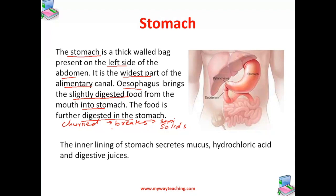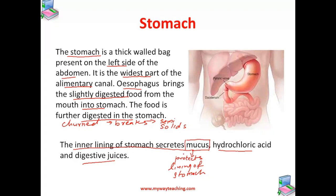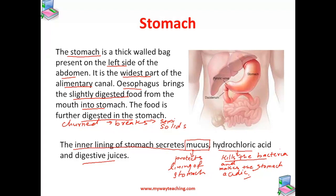The inner lining of the stomach secretes mucus, hydrochloric acid, and digestive juices. Mucus protects the lining of the stomach. Hydrochloric acid kills the bacteria that may have entered the stomach with food, and also makes the stomach acidic, which is necessary for the proper action of digestive juices.